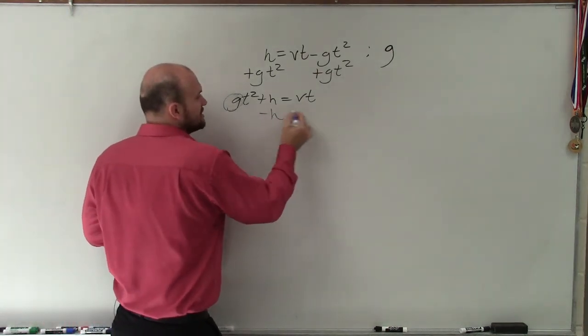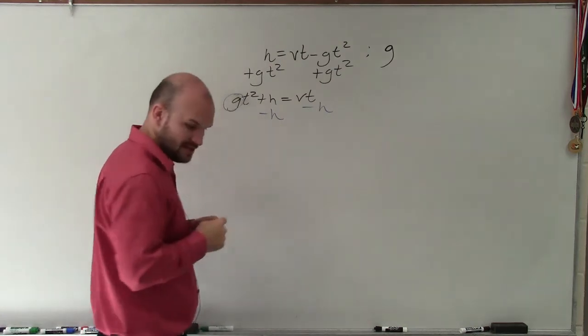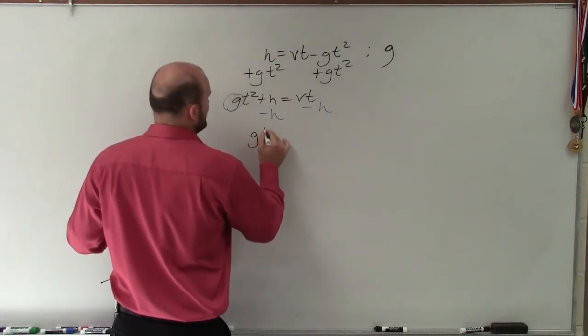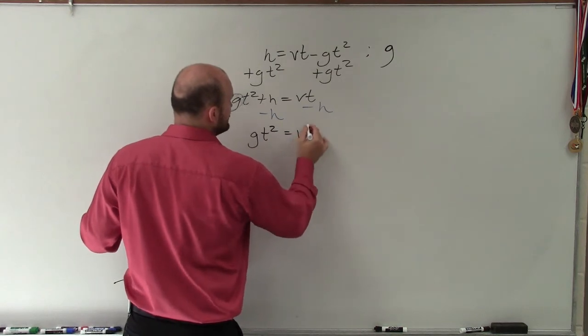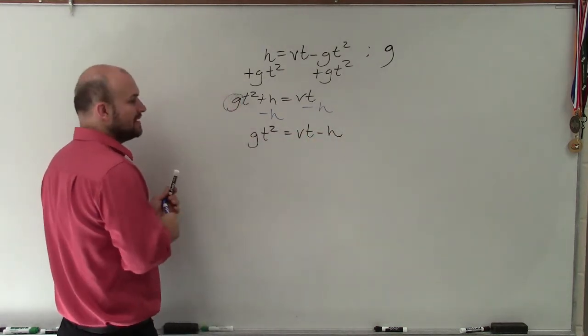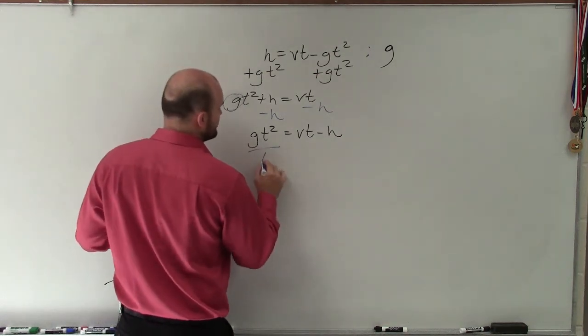We always undo addition and subtraction first. So subtract an h first. And when doing that, I now have gt² equals vt minus h. And then to undo multiplying by t squared, I'll divide by t squared.